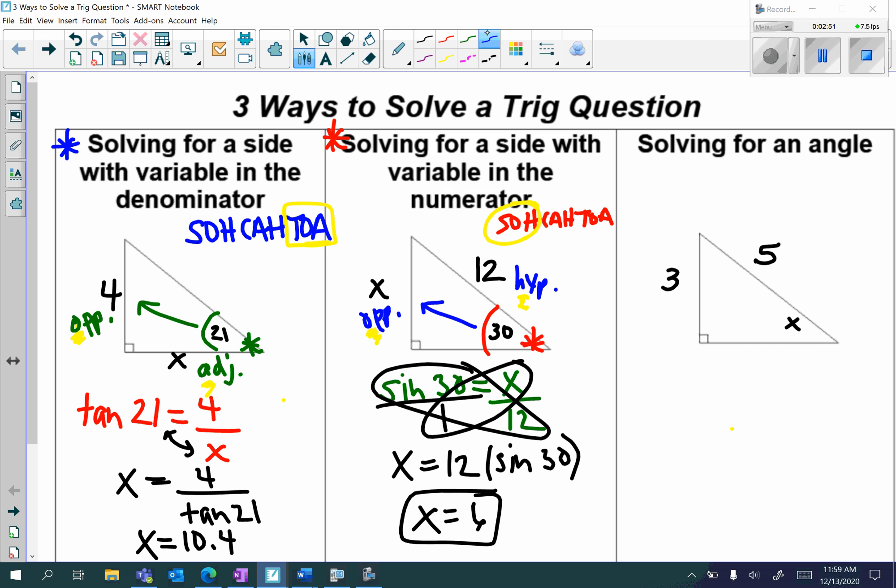And lastly, in our third problem, we're going to be solving for an angle. So again, I'm going to write out my acronym SOHCAHTOA. Let's look for our central angle, which is at x. And we're going to label. 3 is my opposite. It's across from the central angle. And the 5 is my hypotenuse, because that's across from the 90 degree angle.